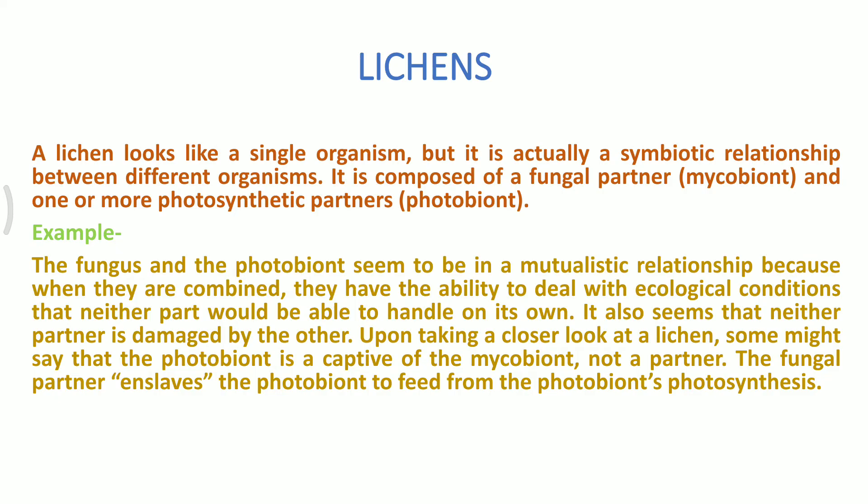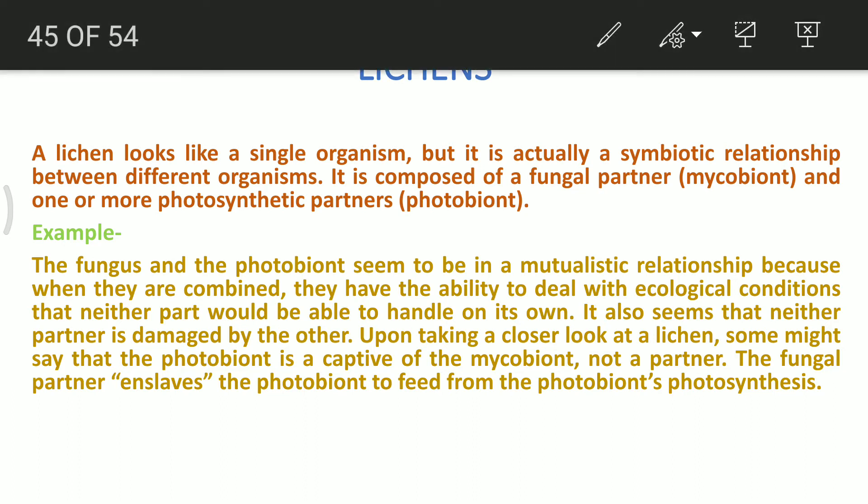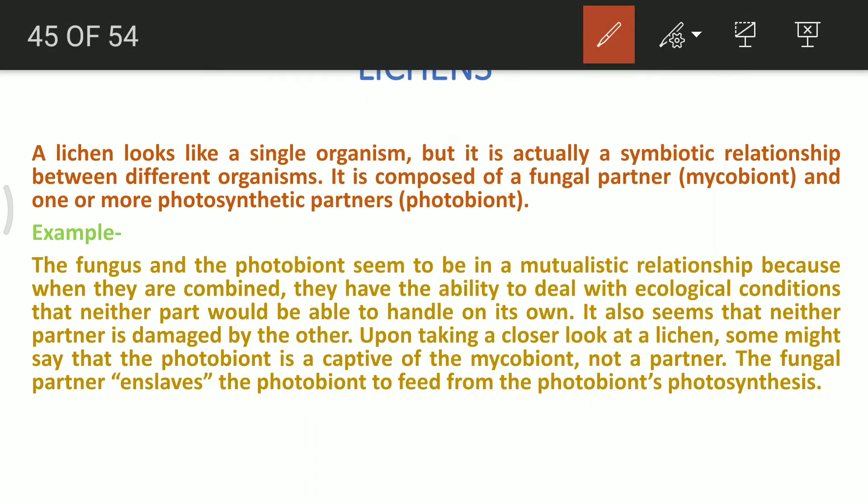A lichen looks like a single organism but it is actually a symbiotic relationship between different organisms. It is composed of a fungal partner which is a mycobiont and a photosynthetic partner which is a photobiont or an alga. Most of the time it is a cyanobacteria.